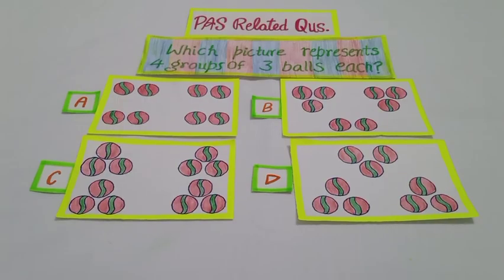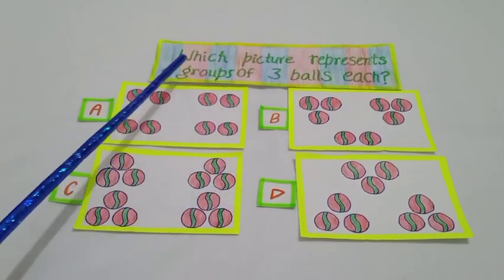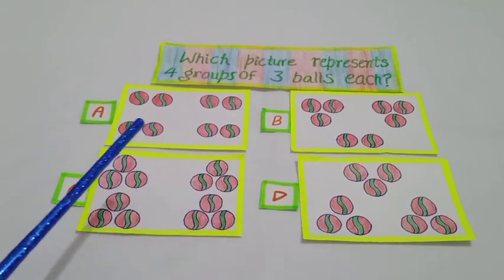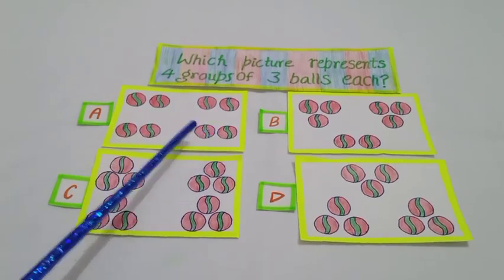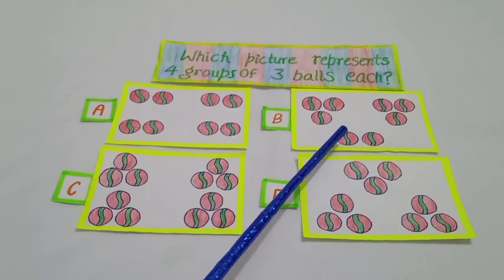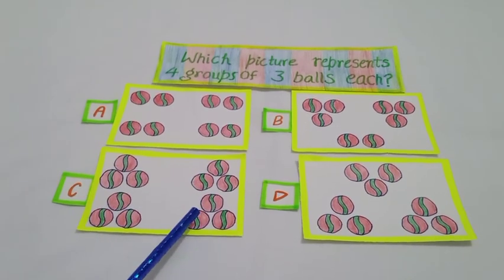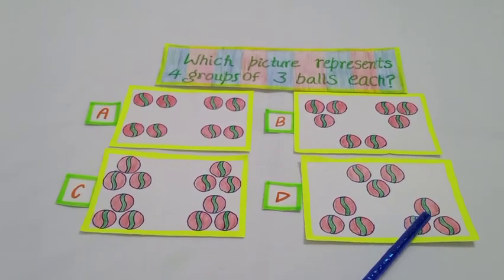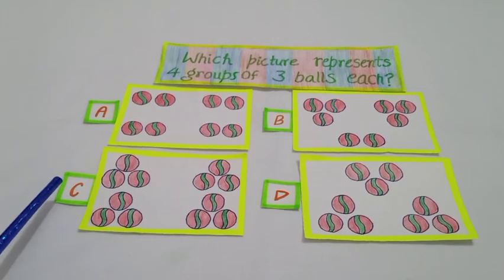Now it's time for a practice question. The question is: which picture represents 4 groups of 3 balls each? We have 4 options. In option A, we have 4 groups of 2 balls each. In option B, we have 2 groups of 3 balls and 1 group of 2 balls. In option C, we have 4 groups of 3 balls each. In option D, we have 3 groups of 3 balls each. So the right answer is C.